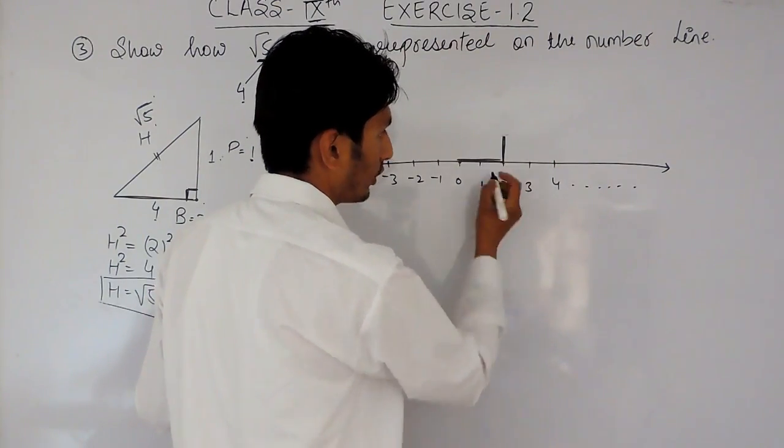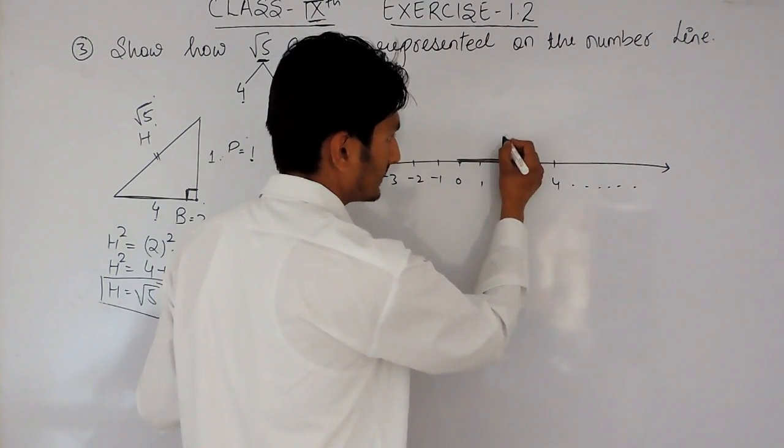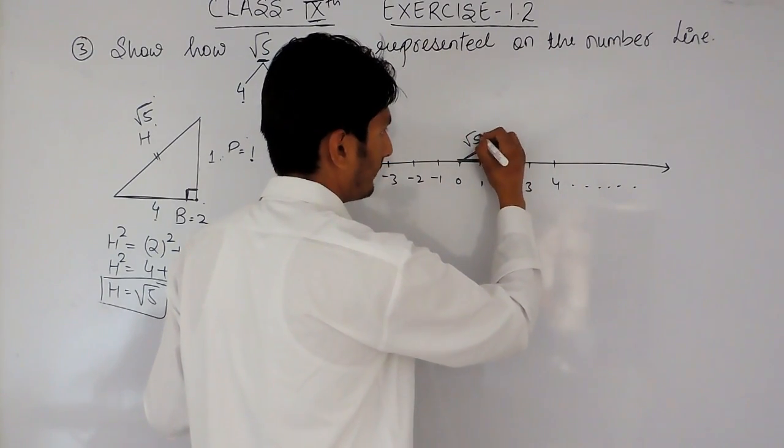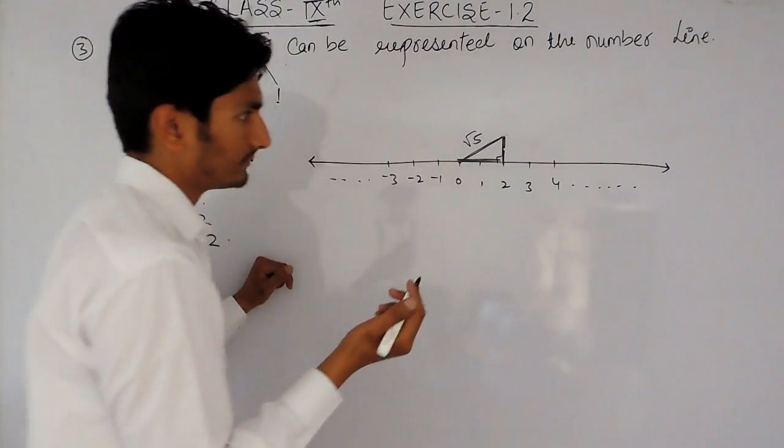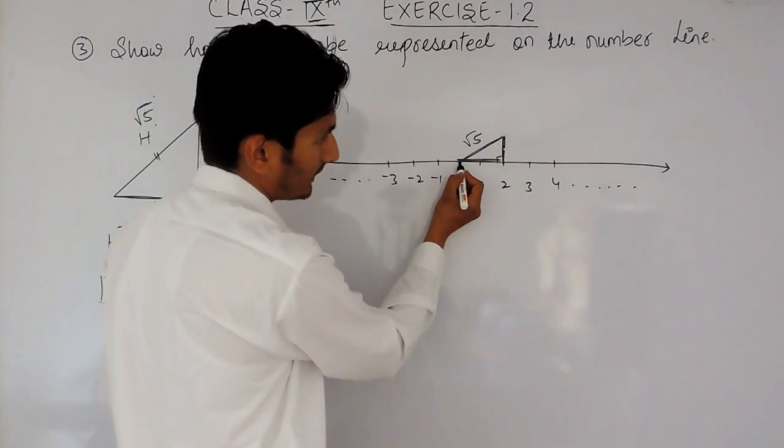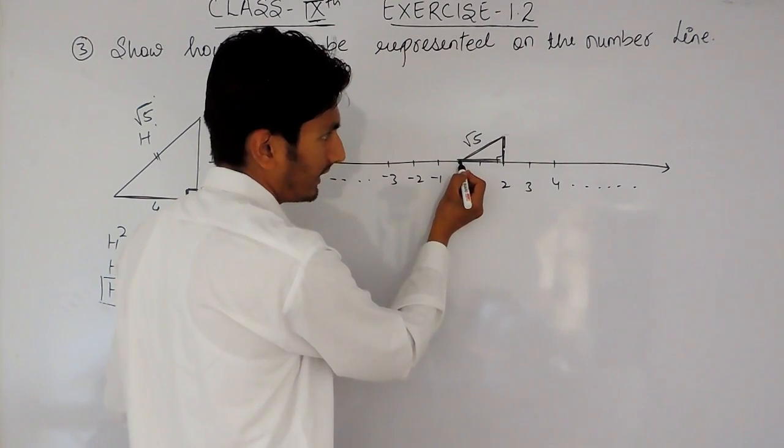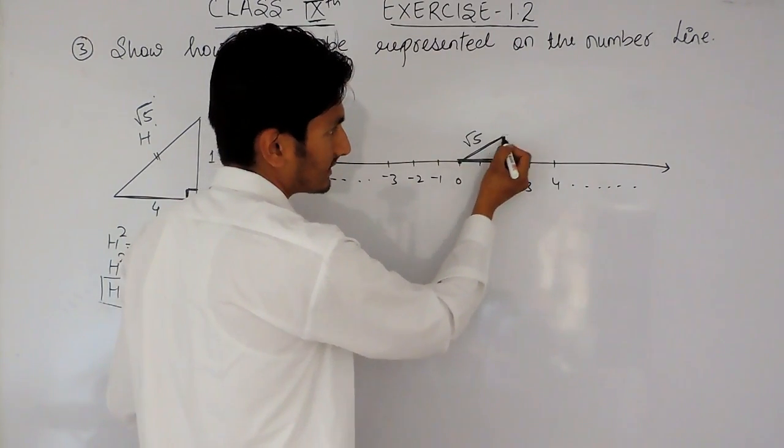Now, if this is 2 and this is 1 and if I apply the Pythagoras theorem here, this will be root 5. Okay, now what we have to do is, you have to take a compass,